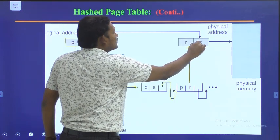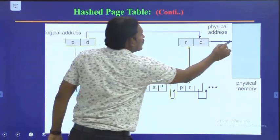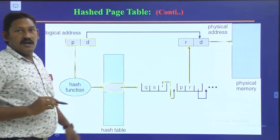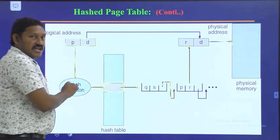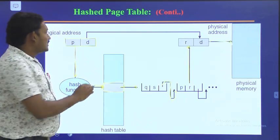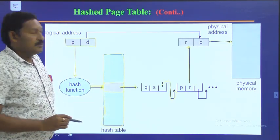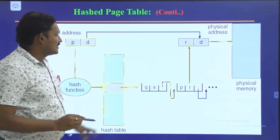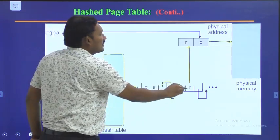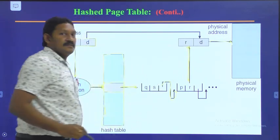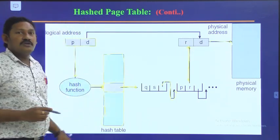Once the correct entry is found in the hash table, the offset value from the logical address and the displacement in the hash table are matched. This gives us the physical address in physical memory. We keep moving through the chain of pointers until we find the required page, and then store or retrieve the data at the identified address location.